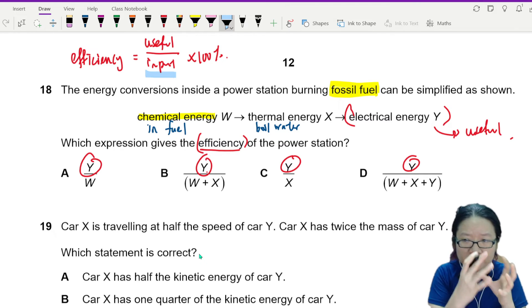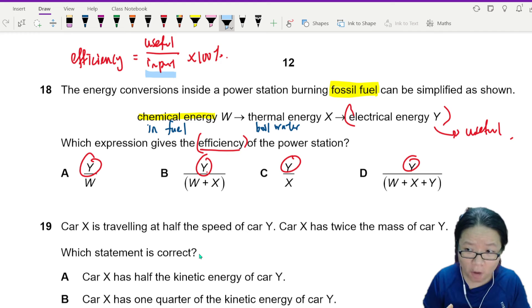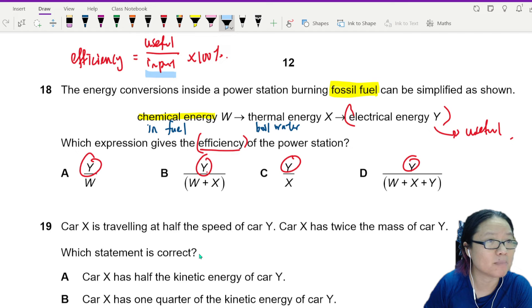So if you think about this, you burn the fuel, the energy of the fuel used to boil water. So it is one form to another to another. The original input is W. The answer is A.